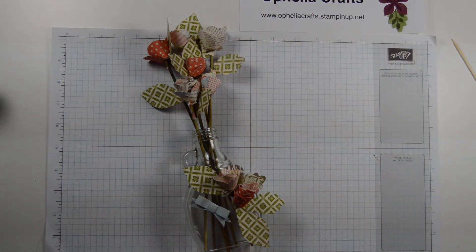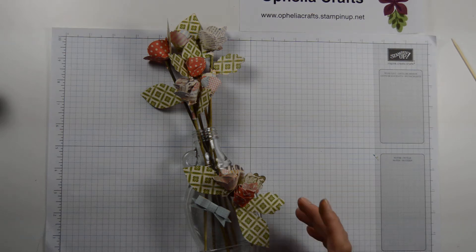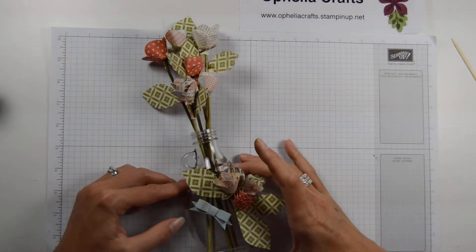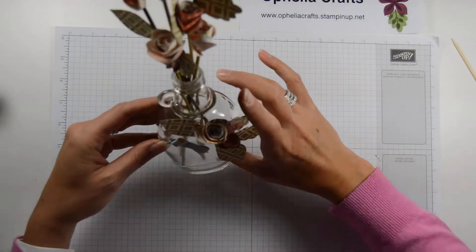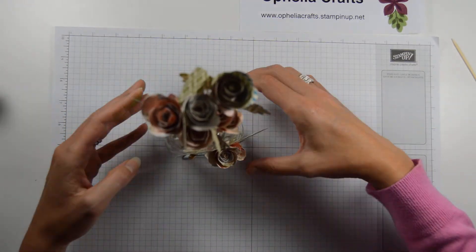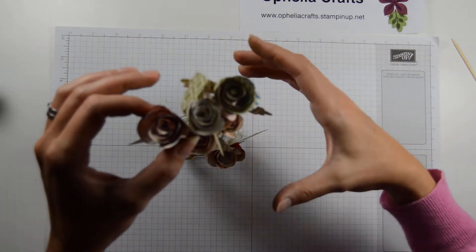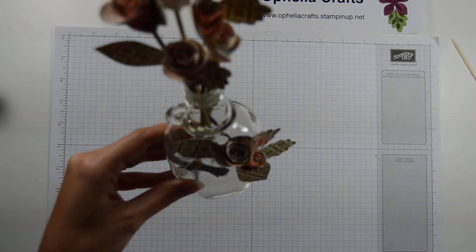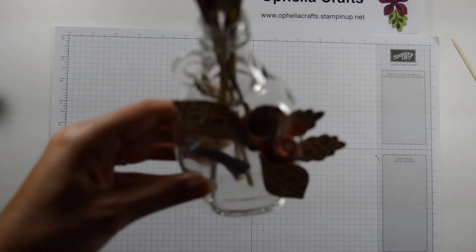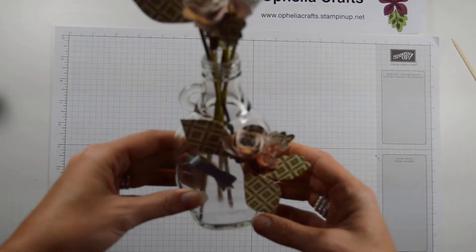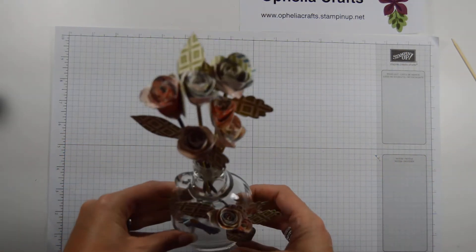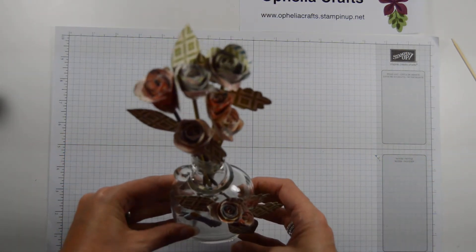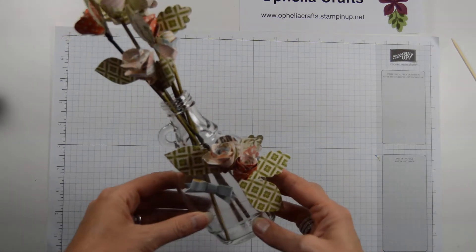Today we're not making a card but we are going to make roses. I've made this lovely bunch of roses here in my glass jar that I saved from maple syrup and I think it's turned out quite nice.